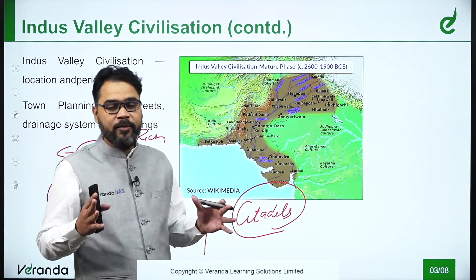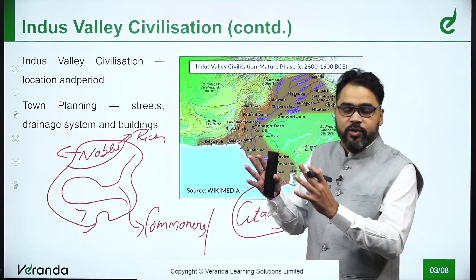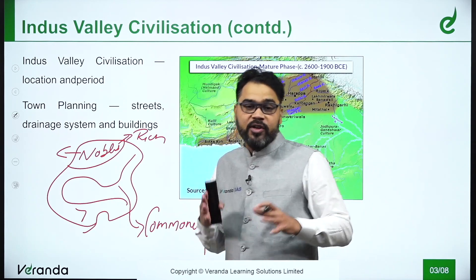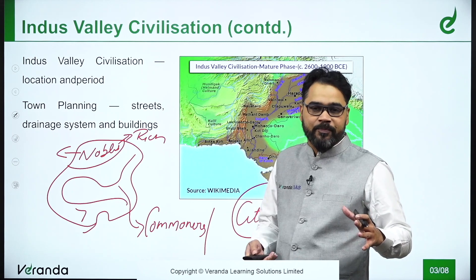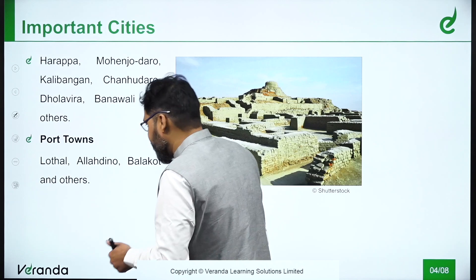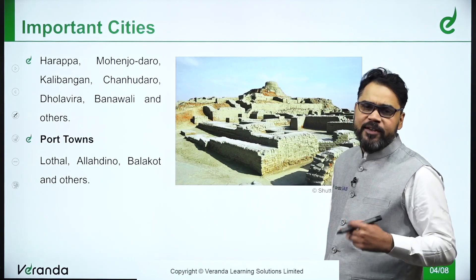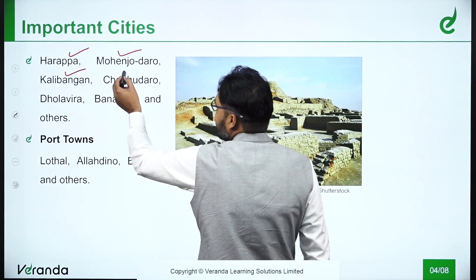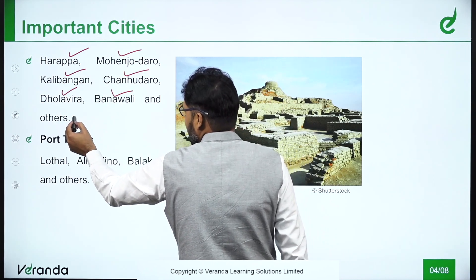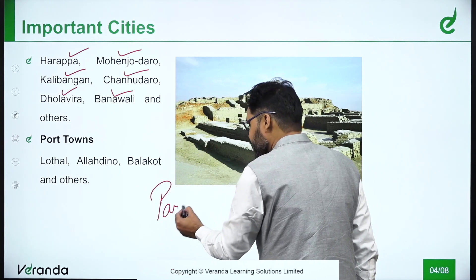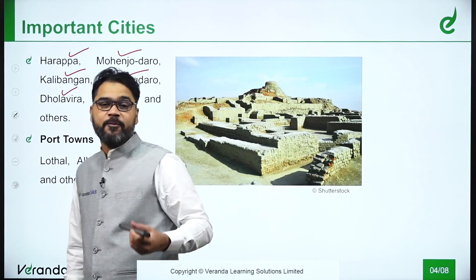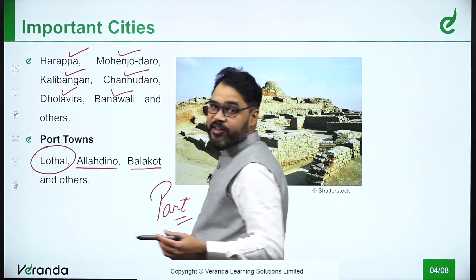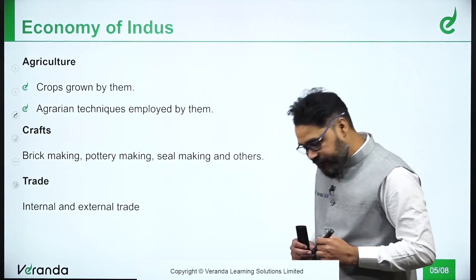There have been instances of a particular godown-type structure where people could store their grains. There were ports that were developed, and there was a Great Bath — a common bathroom for people. The important cities in the Indus Valley civilization included Harappa, Mohenjo-daro, Kalibangan, Chanhudaro, Dholavira, and Banwali. Port towns where evidence of ports has been found include Lothal, Allahdino, and Balakot.